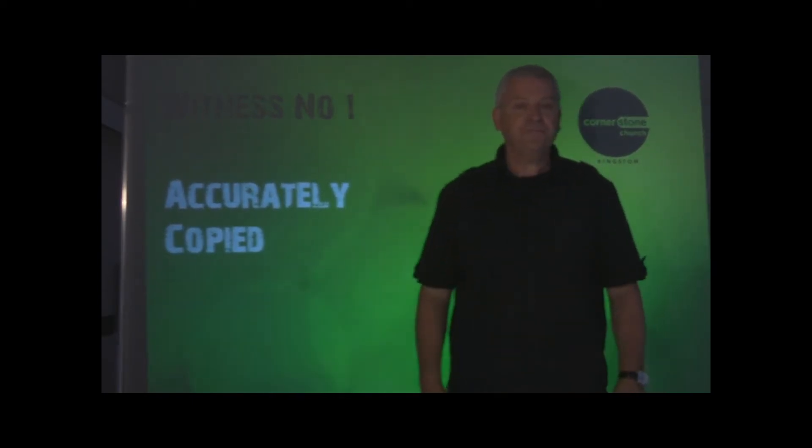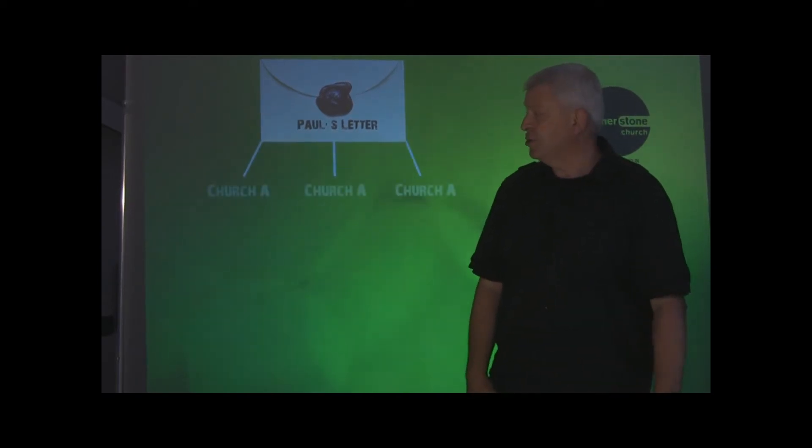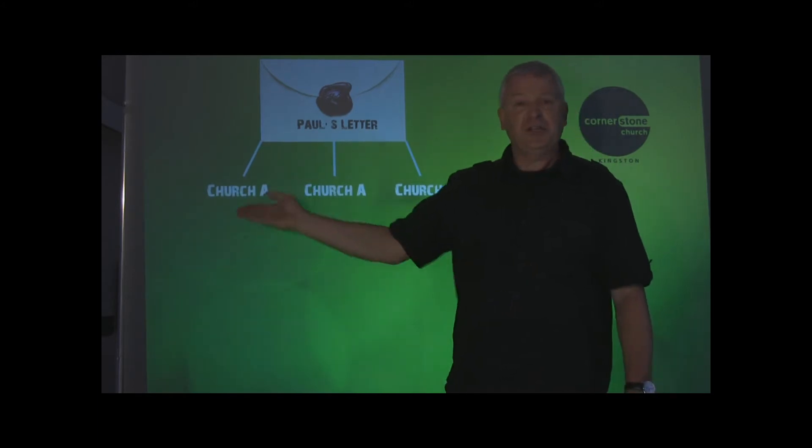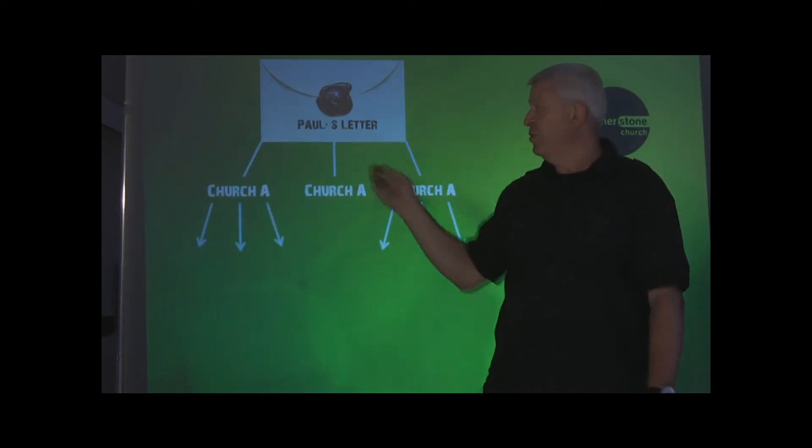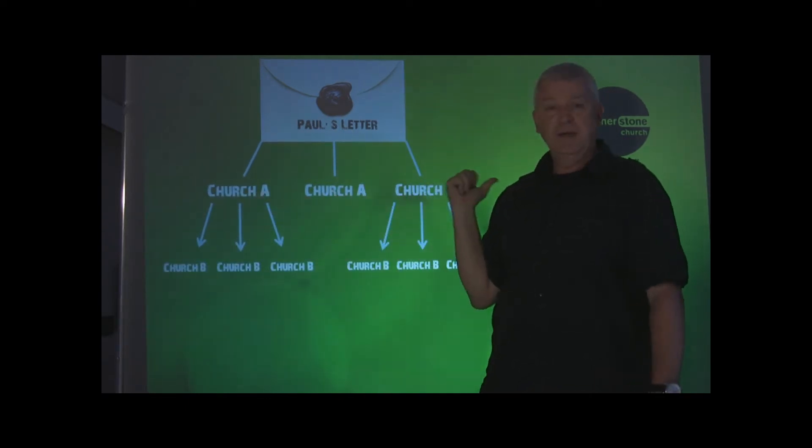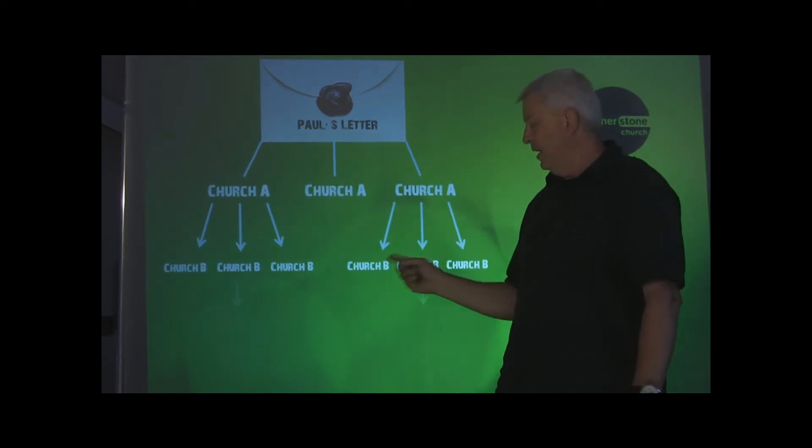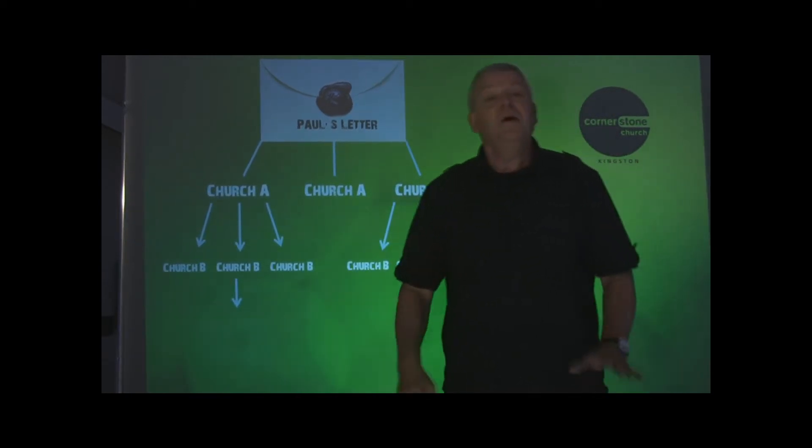Look at this diagram for instance. This is how it works. Paul, a writer of the New Testament, writes a letter and he writes it to an individual church. And that church copies it to other churches. So Paul's original letter is written to this church and they copy it, and you've got this whole line of one line of copy, we call it Church A, let's say. And then from this copy there are other copies taken, and as there are over here, other copies taken.